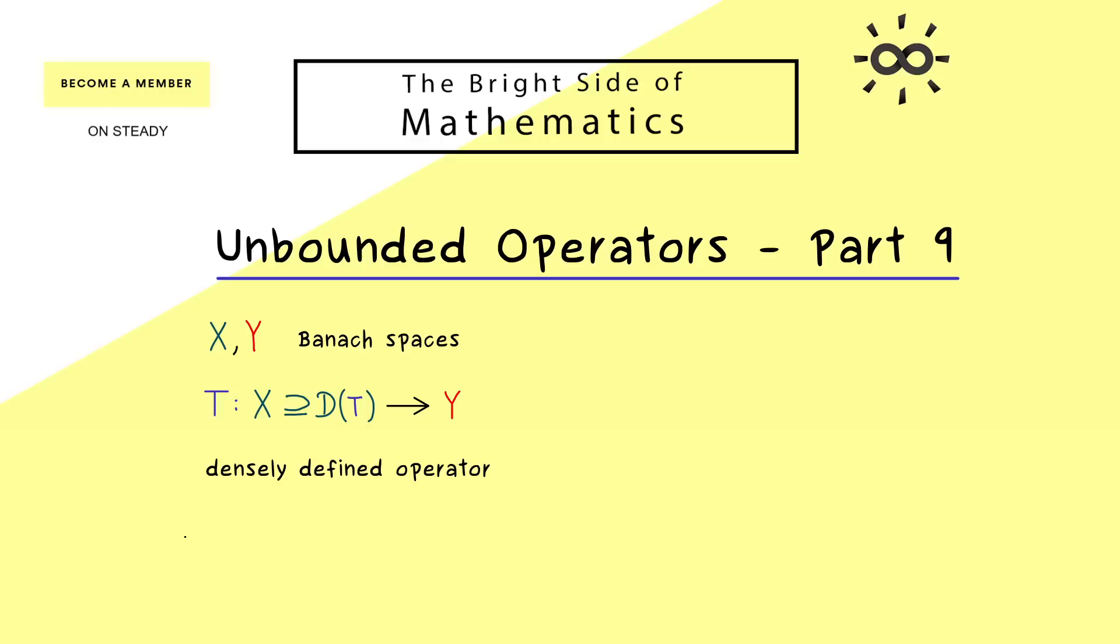And this is all we need to get the so-called adjoint operator T'. However, now this T' goes from Y' to X', so it changes the direction and it also considers the dual spaces. This is important to note, formally this adjoint operator acts on different spaces than T.